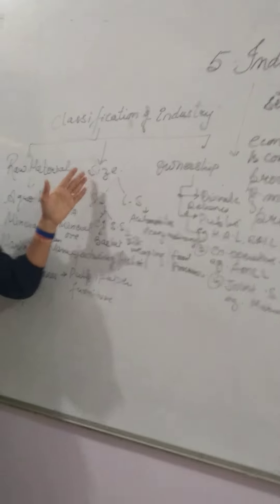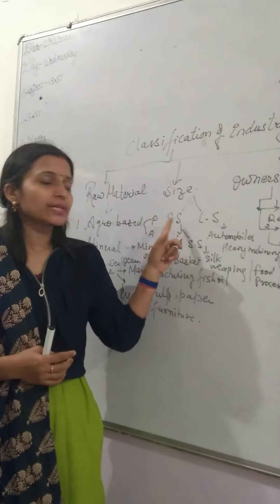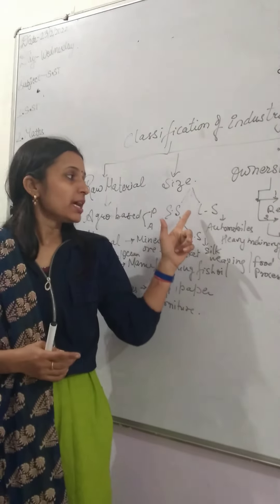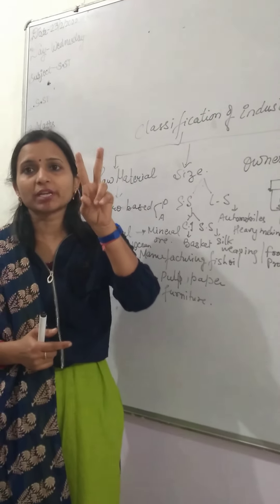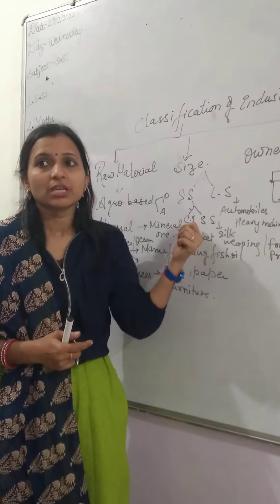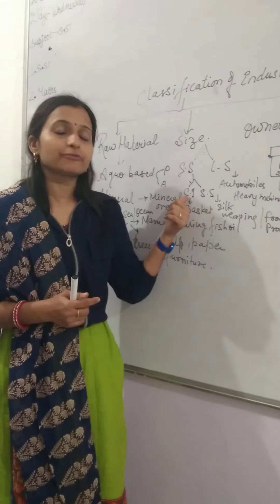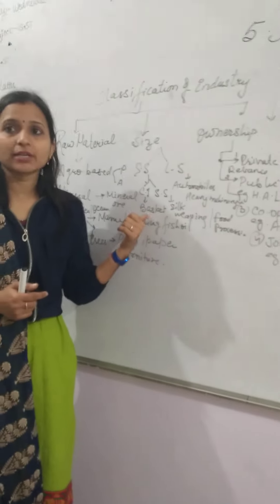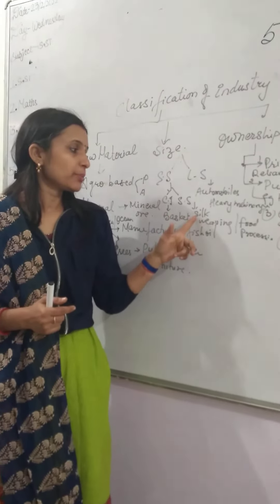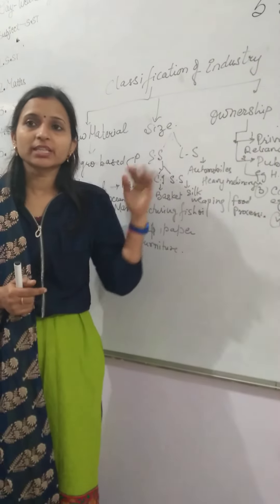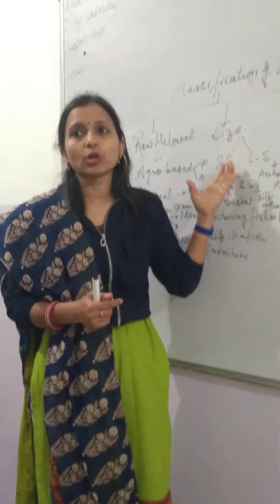Now come to talk about classification according to size. On the basis of size, industries are classified into two parts: small-scale industries and large-scale industries. Small-scale industries are also divided into two types. The first is cottage industries, which are household industries — examples include basket weaving and mat making. Small-scale industries also include self-weaving and food processing, and in this process we use little money and less labor.